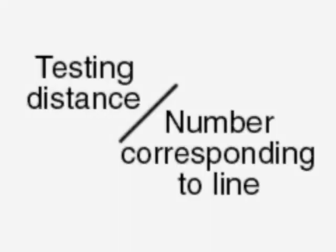Score visual acuity as a fraction. The top line is the testing distance. The bottom line is the number corresponding to the smallest line on which most letters are clearly identified.